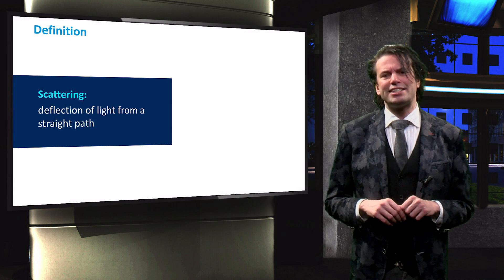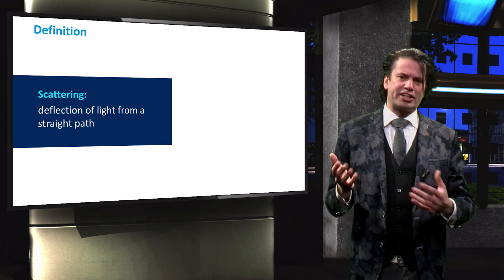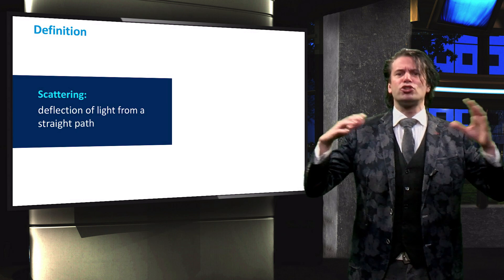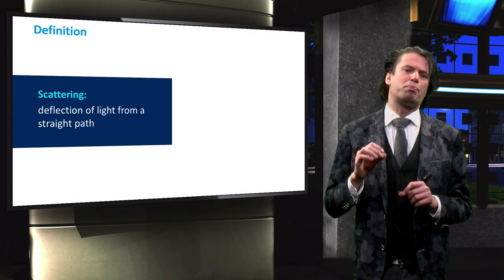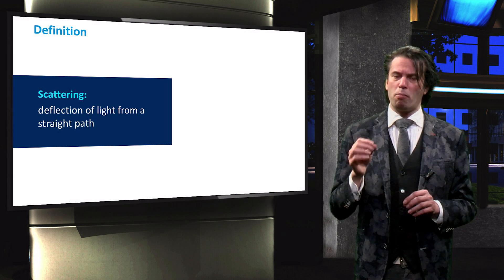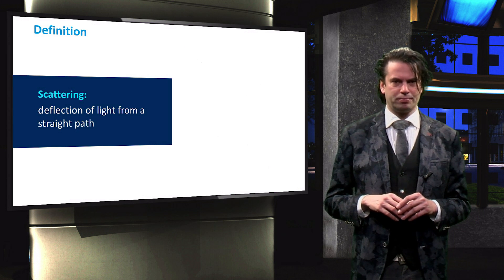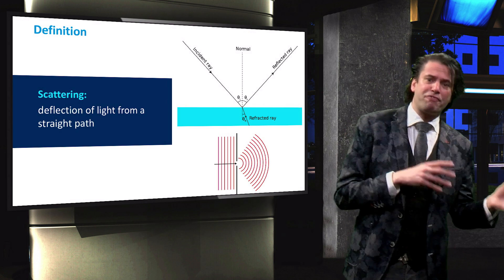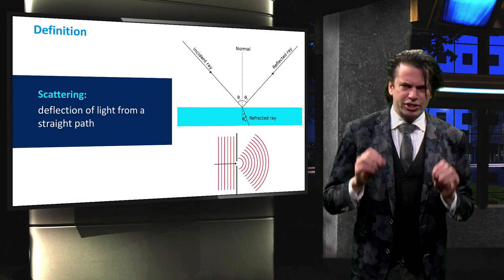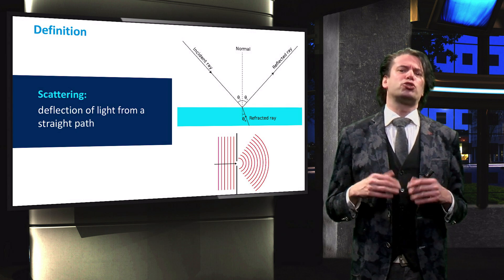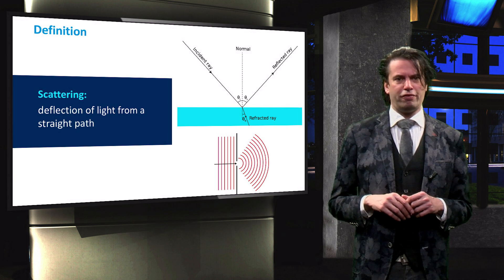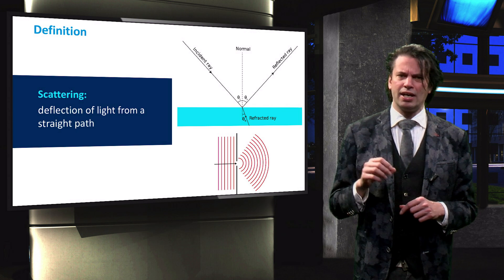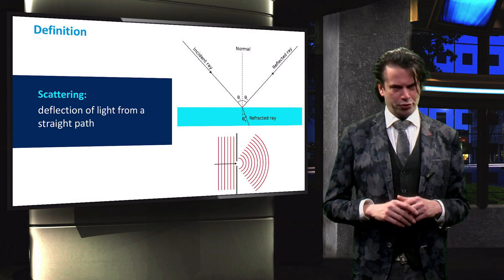The scattering of light is not a separate event from those interactions we discussed so far. Scattering rather encompasses all those events to describe a process where a light beam is deflected from a straight path. Scattering can therefore occur through reflection, refraction, and diffraction. Scattering can even occur through the absorption and subsequent re-emission of a photon. This type of scattering is known as Raman scattering and is often used in material research.